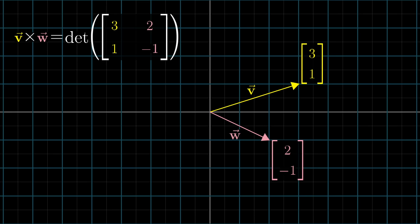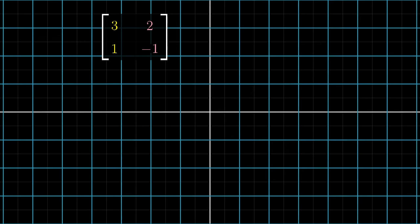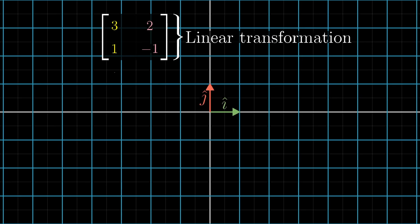This is because a matrix whose columns represent v and w corresponds with a linear transformation that moves the basis vectors i hat and j hat to v and w.